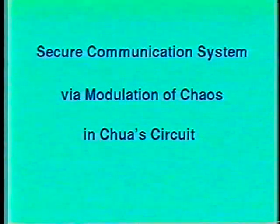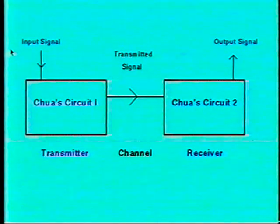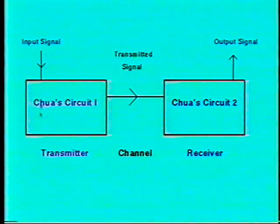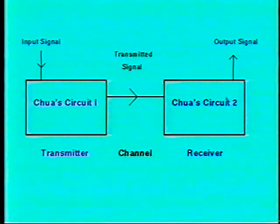We demonstrate here how chaos in the Chua circuit can be used in a secure communication system. The input signal is scrambled by the chaos in the Chua circuit in the transmitter. The scrambled signal is then transmitted through the channel. At the receiving end, an identical Chua circuit de-scrambles the signal through the process of chaotic synchronization, thereby recovering the input signal at the output.